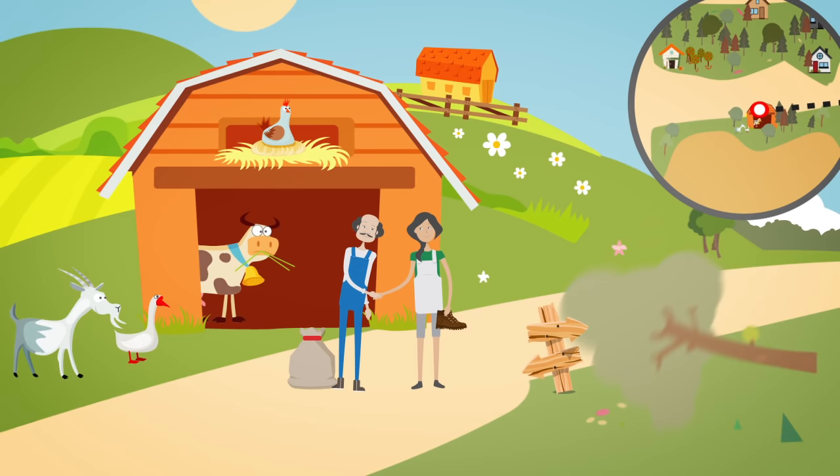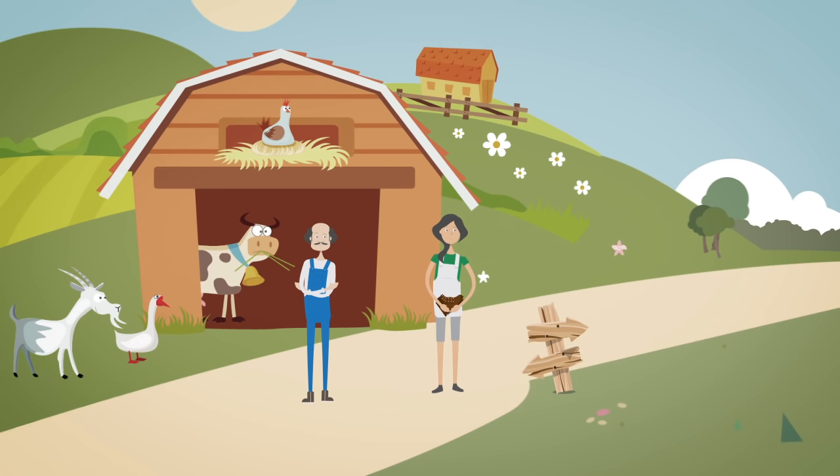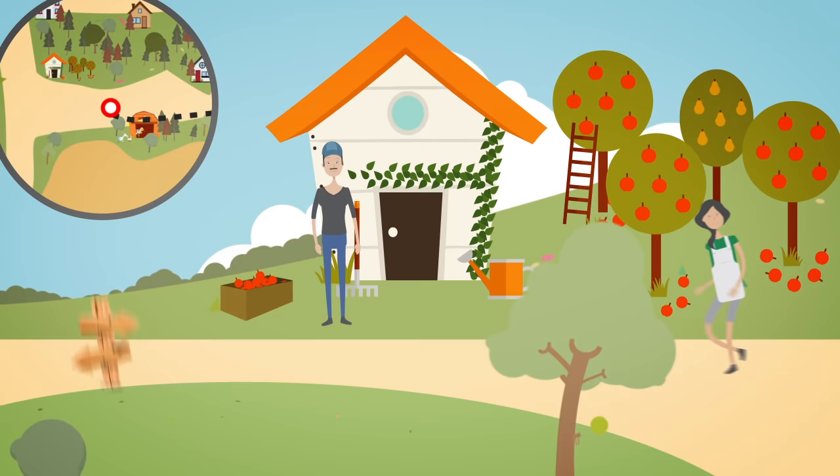The next day, the shoemaker sent Catherine again to get another bag of wheat. But this time, the farmer replied, I'm sorry, I don't need a second pair of shoes. But I will give you wheat for a box of apples. So Catherine went to the gardener and proposed to exchange the shoes for some apples.